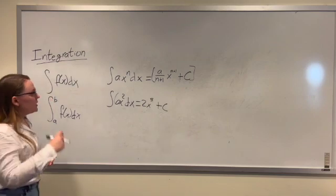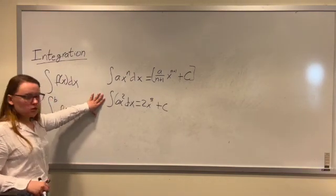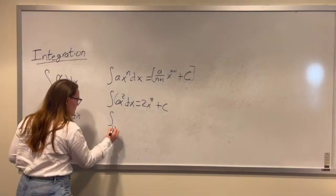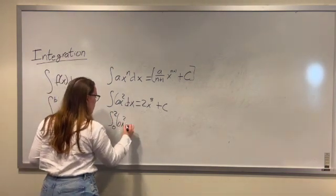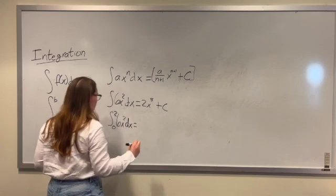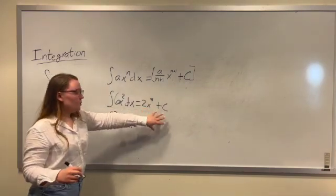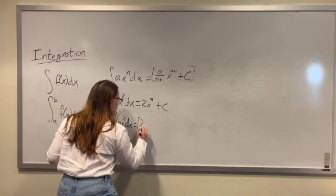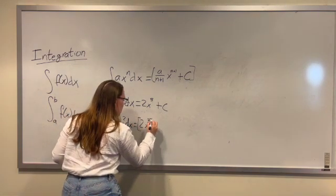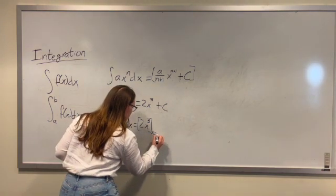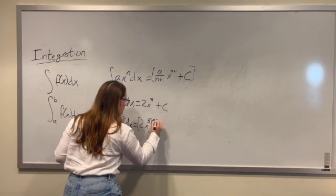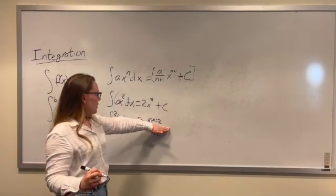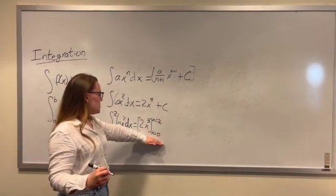Now if we wanted to take the definite integral of this function, let's say from 0 to 2, what we do is we integrate it like we did here. We don't need the c anymore. And we leave this right here, 2x cubed. And we're going to evaluate it from x equals 0 to x equals 2. So what we're going to do is we're going to plug in the top number minus the bottom number.